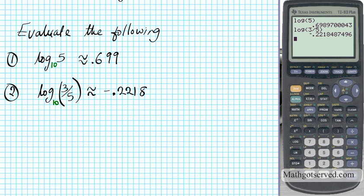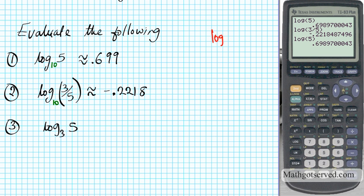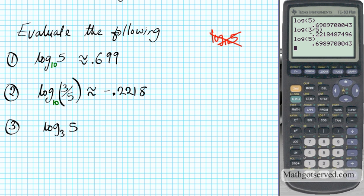Now what if we wanted to do something like log base 3 of 5? It would be wrong to just enter log 5 in the calculator, because log without the base is a common log — it's base 10. What that would compute is log base 10 of 5, which is not what the question asks. The question asks for log base 3 of 5. So we need to change this into a common logarithm, because TI-83s only speak log base 10 — that's the only thing they've been programmed to compute. We need to apply the change of base formula.